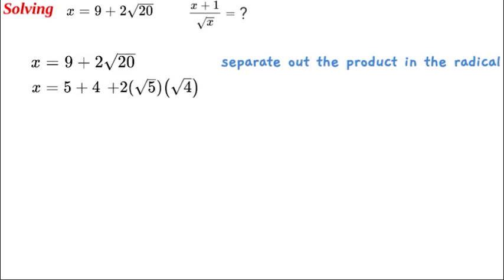Now, looking even closer at the square roots, we can rewrite x as equal to the square root of 5 all squared, plus the square root of 4 all squared, plus twice the square root of 5 times the square root of 4.